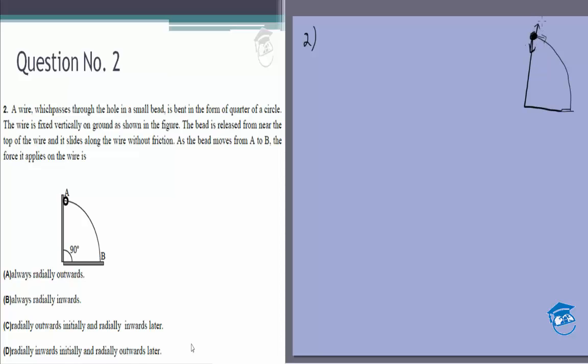That means mg is equal to N, so initially the normal force is radially outwards. By the time it reaches this point, it has some speed, so it actually has a component of force in this direction which gives it mv squared by r, and obviously gravity is vertical, so this has to be the normal force.